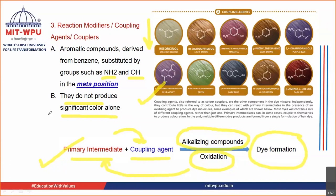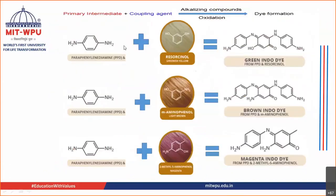Let us see one of the actual reactions. This is the primary intermediate PPD — paraphenylenediamine. This you are reacting with resorcinol. When you add H2O2, oxidation takes place — H2 is removed. If you see the reaction, two molecules of PPD are there: one molecule loses two hydrogen atoms, the other loses one hydrogen. It then reacts with a molecule of resorcinol, forming a dye that is green indodide.